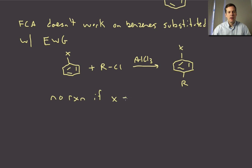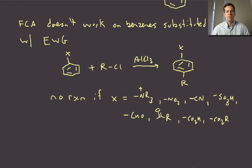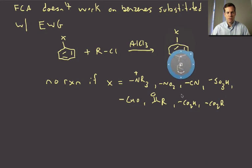If X equals any of the following so any strongly electron withdrawing groups. Okay so ammonium, nitro, cyano, sulfonic acid, an aldehyde, a ketone, an acid, an ester so none of these are going to work. Okay so that's a bit of a limitation and so you have to figure out ways around that if you actually want to get to those types of products.